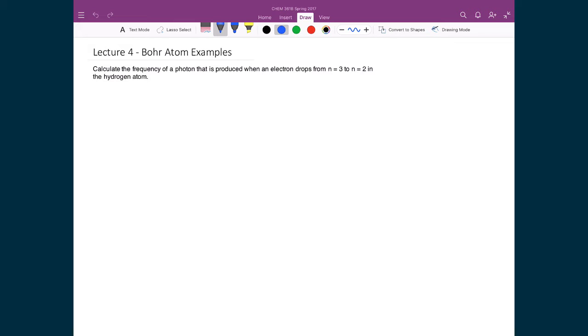And so in this problem, we're going to calculate the frequency of a photon that is produced when an electron drops from n equals 3 to n equals 2 in the hydrogen atom. And so in the end, what we're going to ultimately do is we're going to just use the Rydberg equation again, which we've already used before.